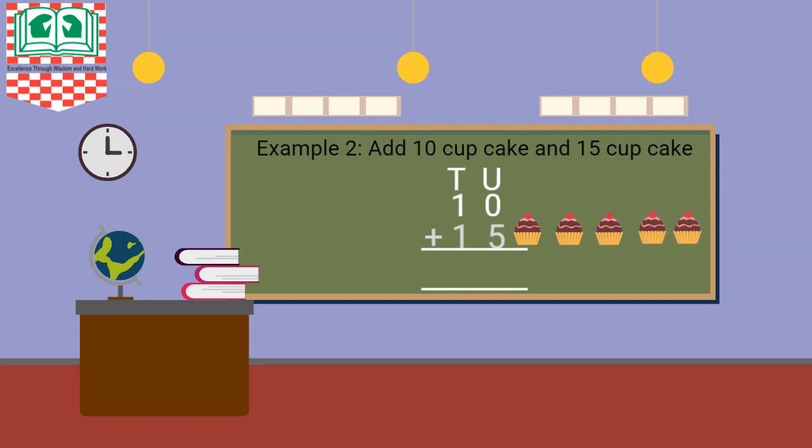1, 2, 3, 4, 5. Good. You're doing good. Now we add your 1 cupcake and the other cupcake, giving you 2 cupcakes. That's beautiful. You're all doing well. Well done.